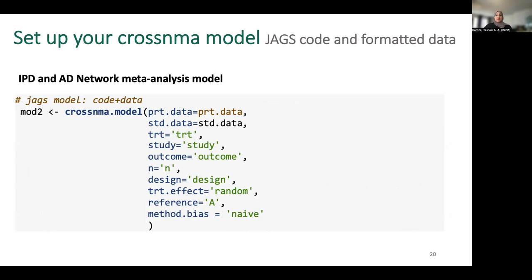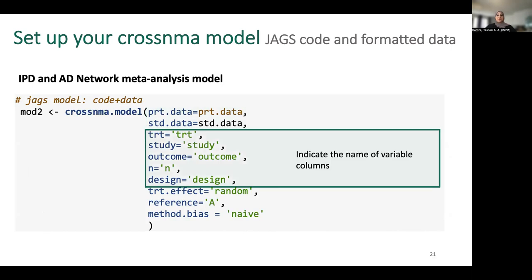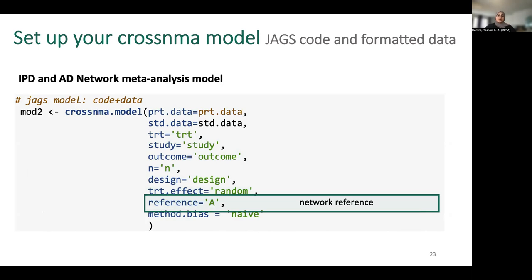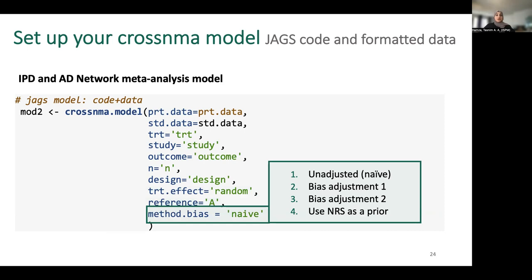Combining these together in a CROSS NMA model, you need to indicate the name of your individual participant data and aggregate data, then indicate column names of these variables. You then choose which model to be used to combine treatment effects across studies, either random or common effects model. You set the reference treatment. In this example, relative treatment effects will be evaluated versus A. And finally, you indicate which approach you would use to combine observational and clinical data.